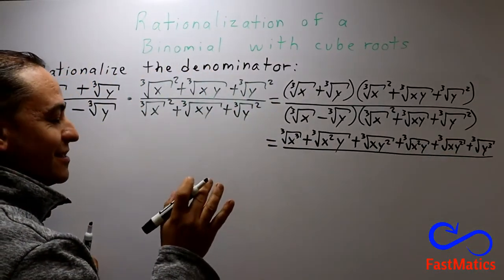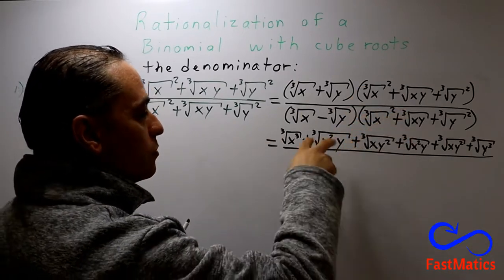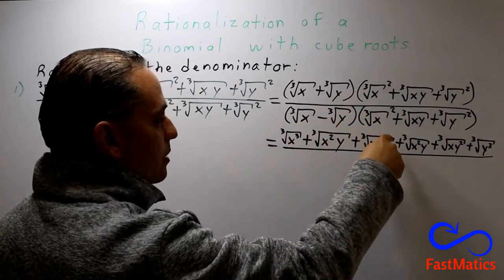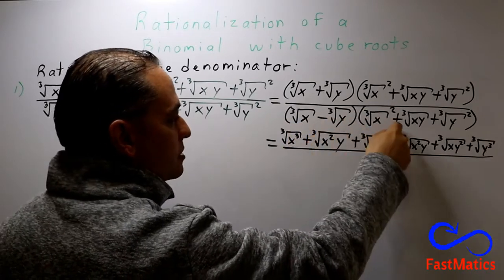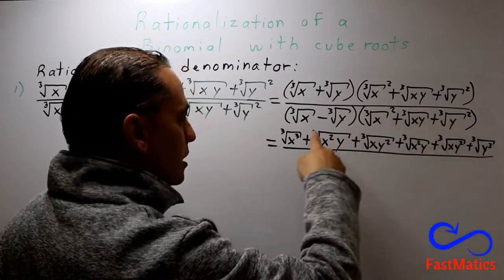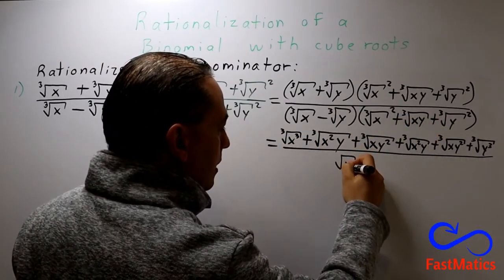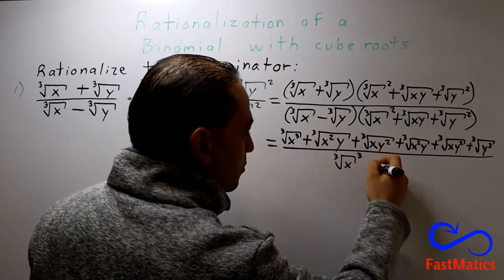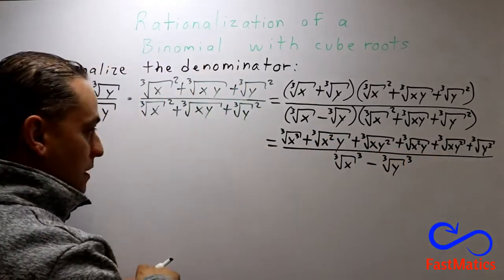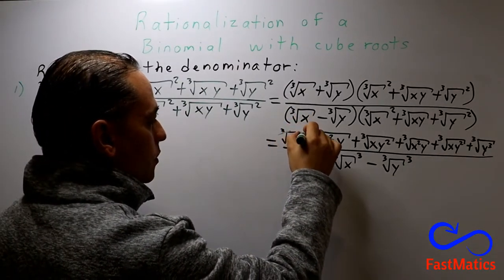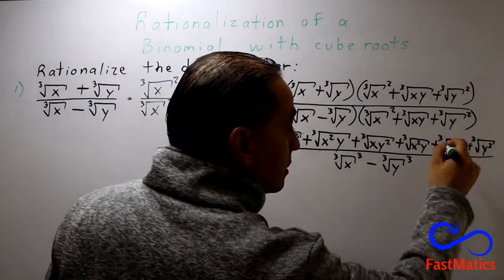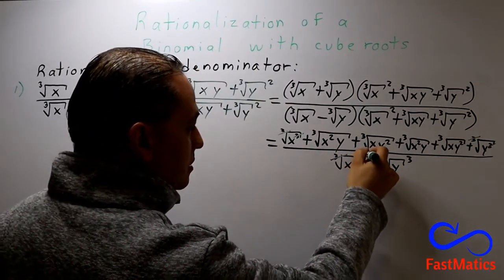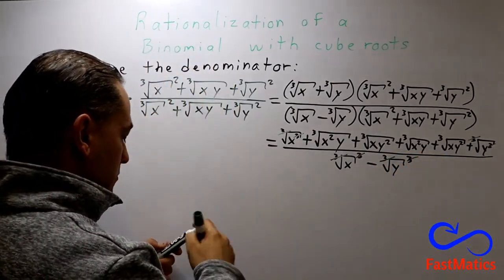And here, it is magic. If you remember the rules for the special products, when you have the first and the second multiplied by the first squared, opposite sign, the first times the second plus the second squared, you are only going to put exponent 3 here. You copy the sign and here exponent 3. Finally, the cube root with exponent 3 — goodbye. The cube root and the exponent 3 — goodbye. Goodbye.